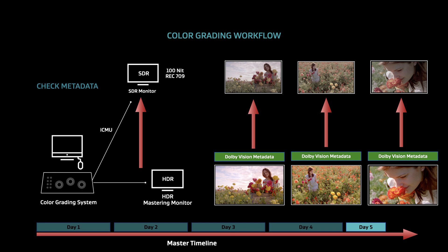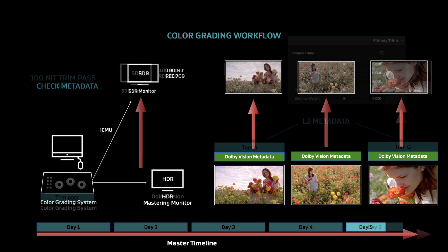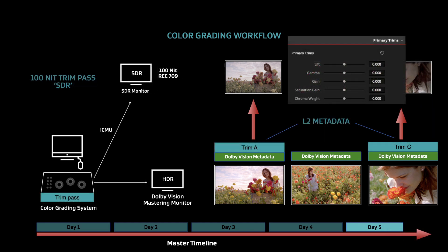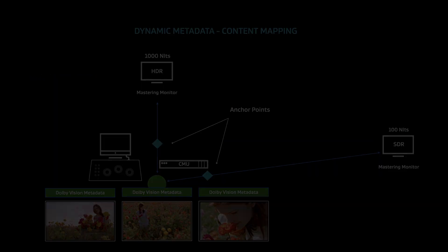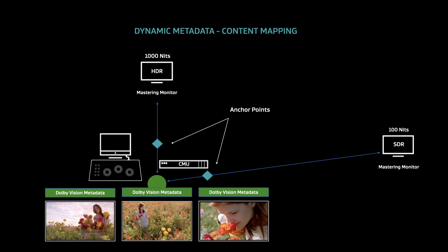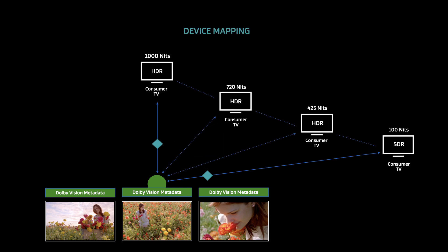The colorist then enables the content mapping process that emulates the Dolby Vision process that occurs in the consumer TV or device. It maps the master HDR image down to SDR Rec. 709 at 100 nits, which is the furthest possible mapping point, and the colorist can then choose to further adjust the mapping to their desired look. For a one-hour show, this trim pass takes roughly half a day. By creating and approving these metadata anchor points in the color suite, when the image and metadata are delivered to the TV or device, they tone map correctly to the capabilities of that individual display.